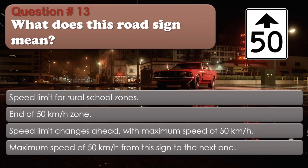Question number 13: What does this road sign mean? Options: Speed limit for rural school zones. End of 50 km/h zone. Speed limit changes ahead with maximum speed of 50 km/h. Maximum speed of 50 km/h from this sign to the next one. The correct answer is Speed limit changes ahead with maximum speed of 50 km/h.